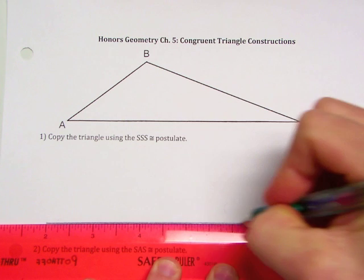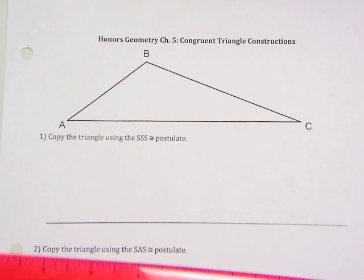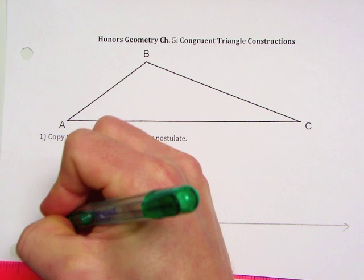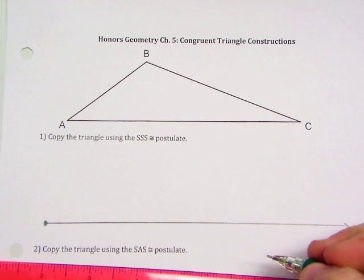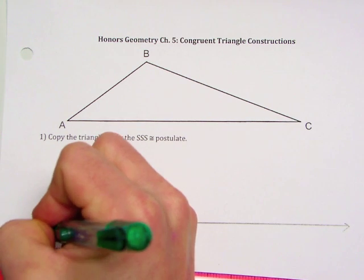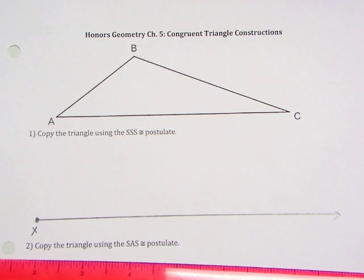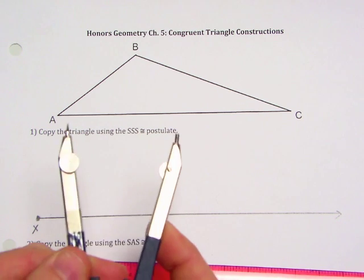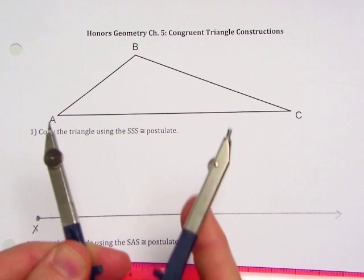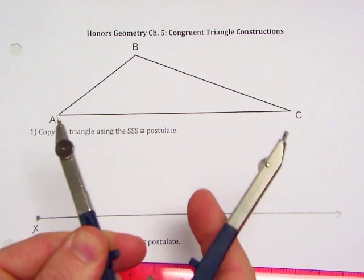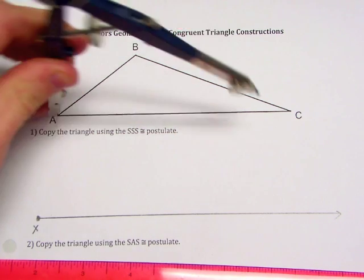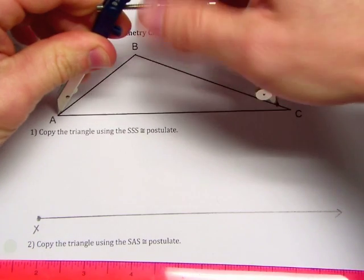I'm going to draw a ray that would extend past the length of segment AC. Let's make that point X right there. Now, what we want to do is copy AC, so we open our compass way up. Hopefully your compass is big enough it opens that far.